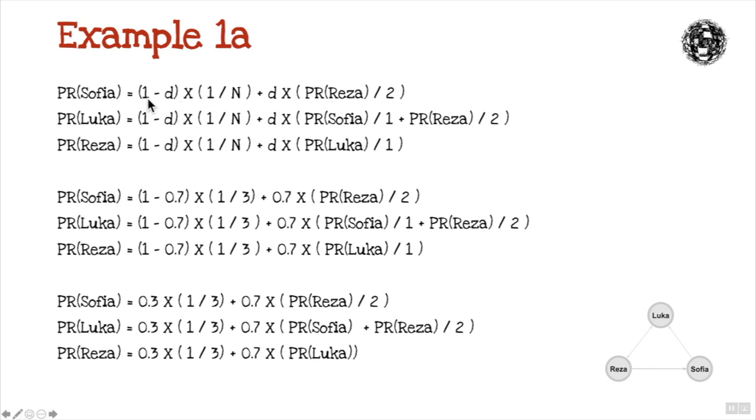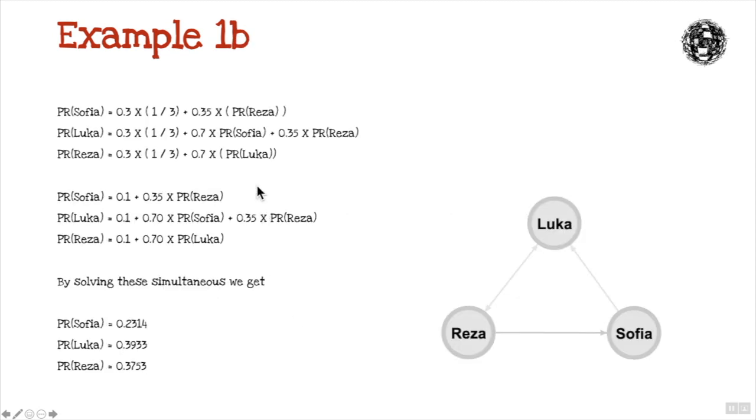So in bigger terms, we're seeing that when we plug in the numbers, we go 1 minus 0.7 times a third, and then we get to this stage where we finally end up with a set of values where we are going to have to solve using simultaneous equations. So I'm not actually going to go through that process. So that is how you calculate your page rank.